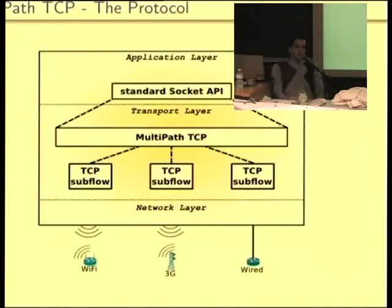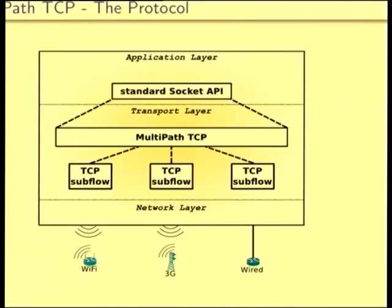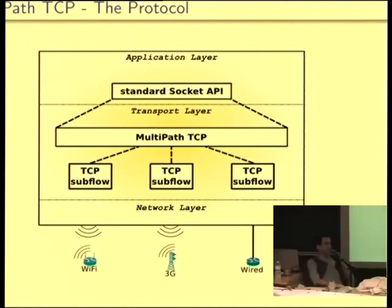I'll explain how MPTCP achieves using several interfaces at the same time. Basically, you have the standard socket API, so the application still talks to a regular socket as with TCP. Then you have a Multipath TCP layer which creates several TCP subflows, and each subflow uses one of the interfaces. For example, one subflow runs over Wi-Fi, another over 3G, and the data stream from the application is distributed over the different TCP subflows.